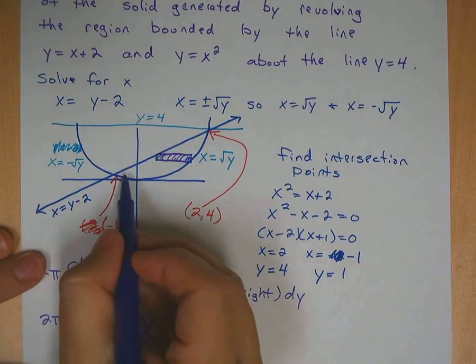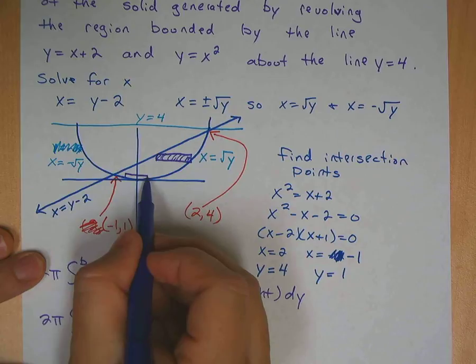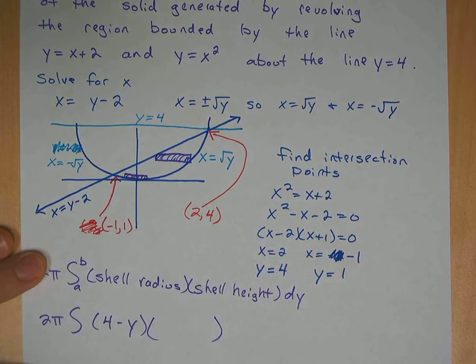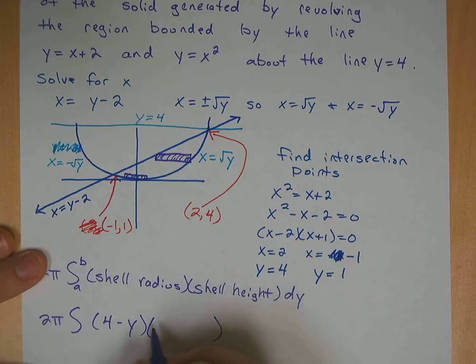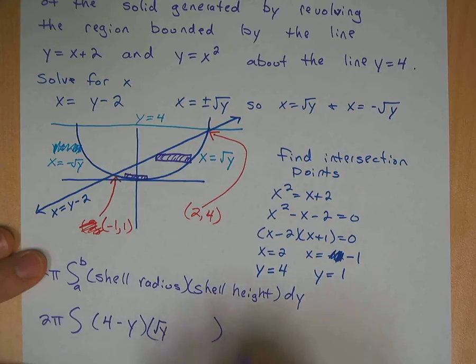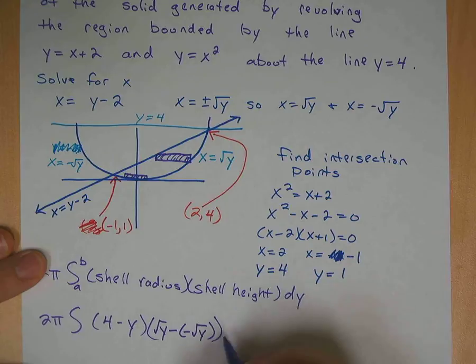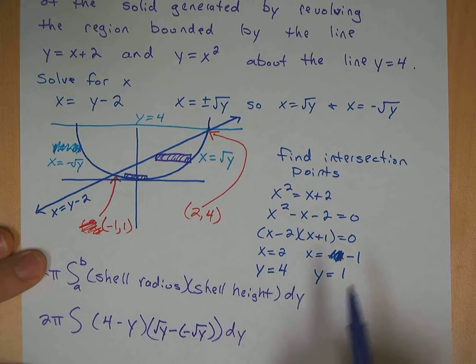One where the top and bottom are this equation, x equals square root of y, and the bottom is negative square root of y. And then when you move up above right here to these two equations, your top would be, or your right side would be x equals square root of y, and your left side would be x equals y minus 2. So for the first one, we'll do this bottom one. I can draw another shell here.